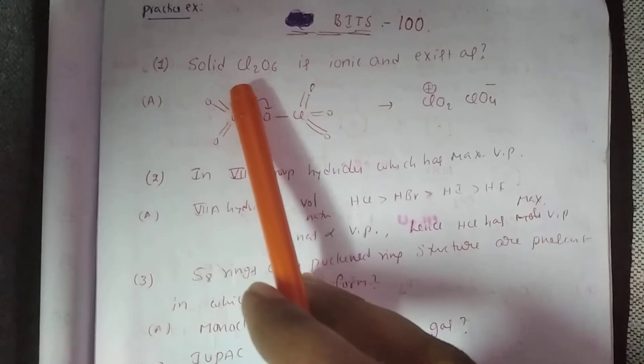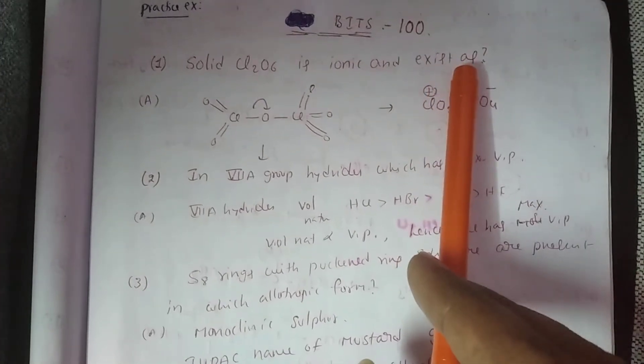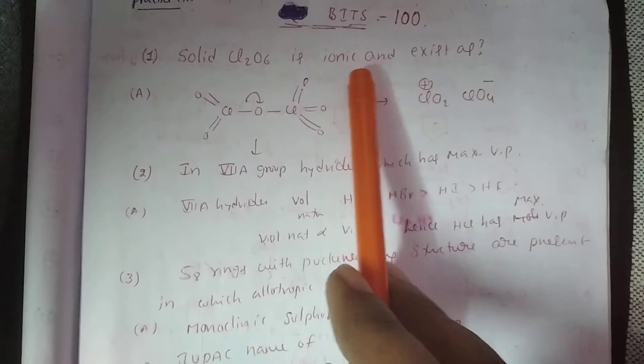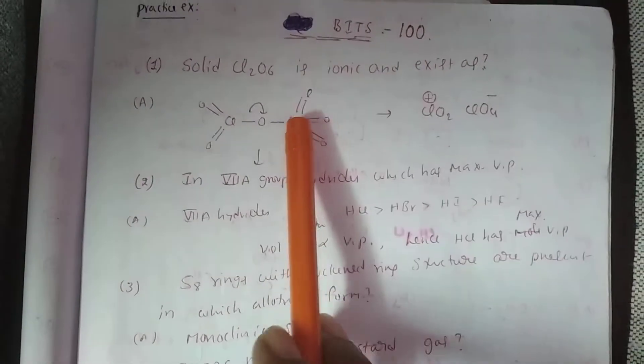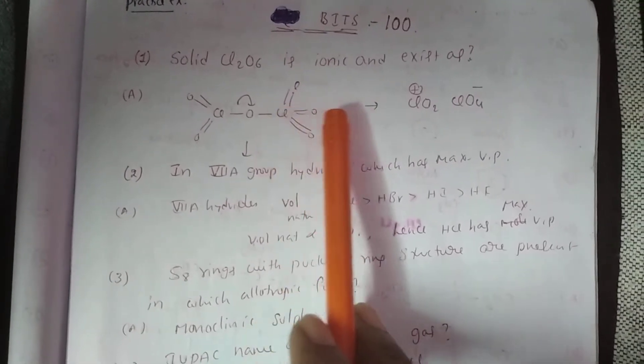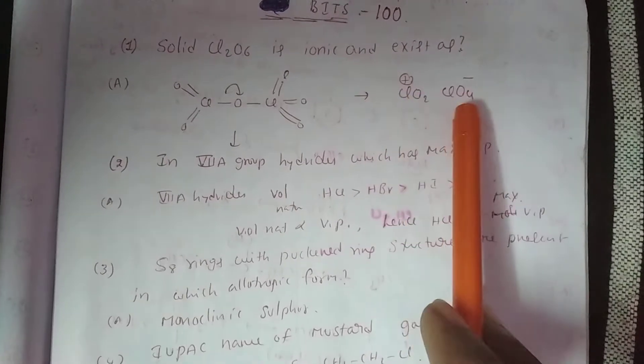These are VIVA questions asked in practical exams and job interviews also. Question: Solid Cl2O6 is ionic and exists as? This is the Cl2O6 structure. It is ionic solid. It exists as ClO2 plus ClO4 minus in solid state.